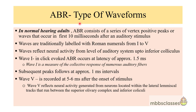Now let us see the type of waveforms in an adult ABR. In a normal hearing adult, click-induced ABR consists of a series of vertex-positive peaks, also called waves, that occur in the first 10 milliseconds after an auditory stimulus. These waves are traditionally labeled in Roman numerals from 1 to 5, and the respective waves from 1 to 5 reflect the neural activity from the level of the auditory system up to the inferior colliculus. Wave 1 reflects the activity of the auditory nerve.